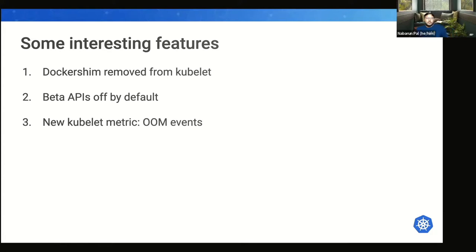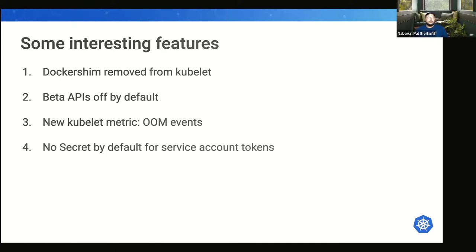Kubelet now offers a Prometheus metric that registers the number of out-of-memory events that have occurred in a container. This will empower site reliability engineers in analyzing outages and finding the root cause of failure. Additionally, until now Kubernetes created a service account secret by default when creating a pod, containing a token for accessing the API. From Kubernetes 1.25 onwards, this secret won't be created automatically. Users are requested to use the token request API, which has been stable since Kubernetes 1.22, to fetch tokens for accessing the API.